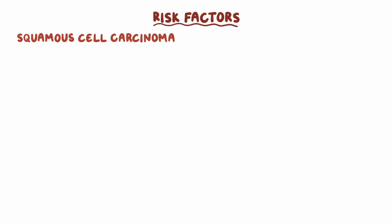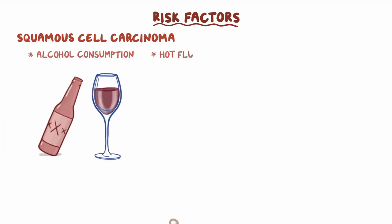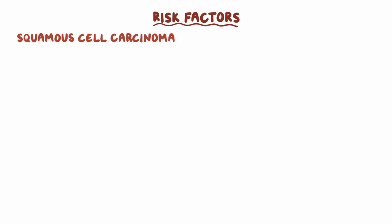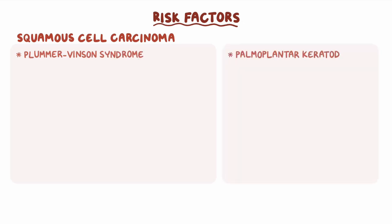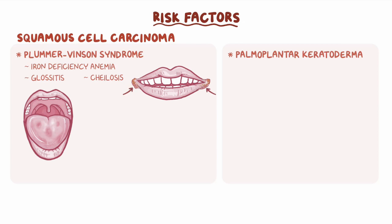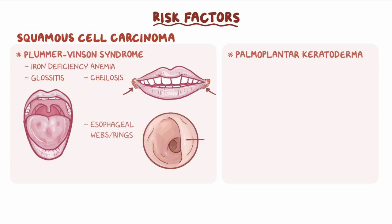Specific risk factors for squamous cell carcinoma include alcohol consumption, hot fluids, and caustic strictures, which is the narrowing of the esophagus following ingestion of a caustic substance like household bleach. Other predisposing conditions include Plummer-Vincent syndrome and palmoplantar keratoderma. Plummer-Vincent syndrome associates iron-deficiency anemia, glossitis (tongue inflammation), cheilosis (inflammation and cracking of the corners of the mouth), and esophageal webs or rings, which are concentric extensions of normal esophageal wall into the esophageal lumen that can cause difficulty swallowing. Palmoplantar keratoderma is a rare disease where thick patches of skin develop on the hands and feet.